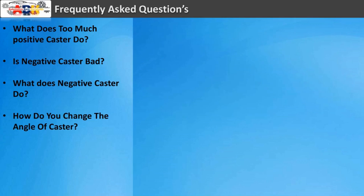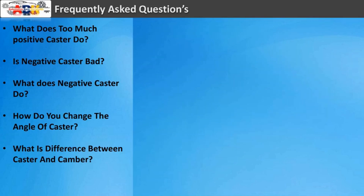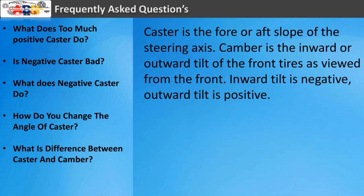How do you change the angle of caster? One way to adjust caster is with an adjustable arm. In the case of a McPherson strut system, this can be in the form of an adjustable tension rod that holds the lower arm forwards or backwards in the wheel arch. The screw can be adjusted to move the wheel forwards or backwards, adjusting the caster angle. What is the difference between caster and camber? Caster is the fore or aft slope of the steering axis. Camber is the inward or outward tilt of the front tires as viewed from the front — inward tilt is negative, outward tilt is positive.